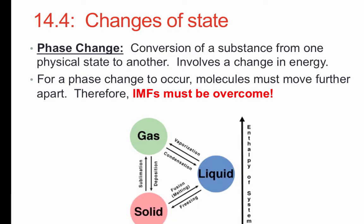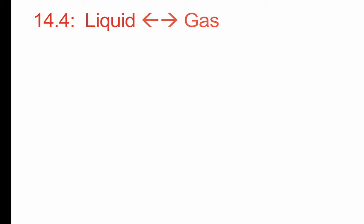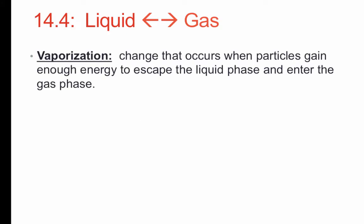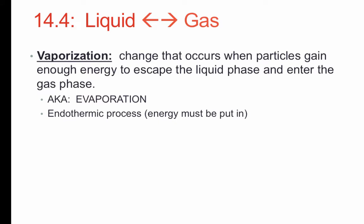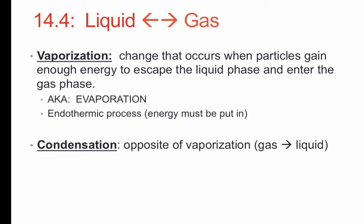So in summary, for an endothermic phase change to occur, molecules must move further apart. Therefore, intermolecular forces must be overcome. In this video, we're going to focus specifically on vaporization — the interconversion between liquid and gas. This is the change that occurs when particles gain enough energy to escape the liquid phase and enter the gas phase. It's also known as evaporation, and it's an endothermic process because energy must be put in.